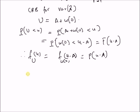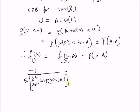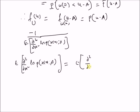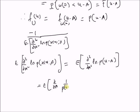Now, the CRB is defined by minus 1 over the expectation of the second derivative of the log likelihood function, that is the log of the probability of X(0). This equals minus the expectation of the second derivative of the logarithm of P of U minus A. This is equal to the expectation of the first derivative of 1 over P of U minus A, multiplied by the derivative of P of U minus A.